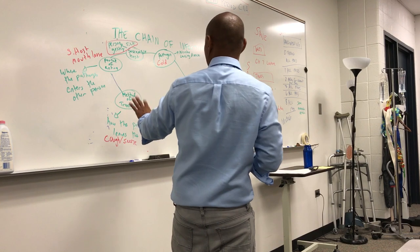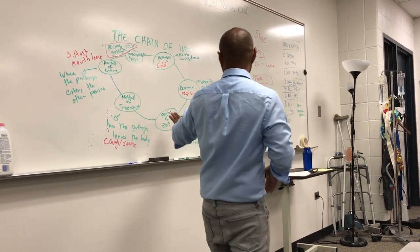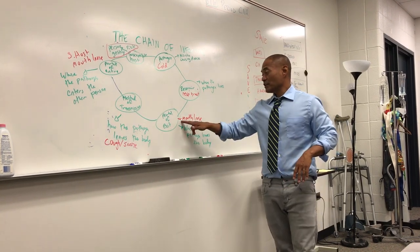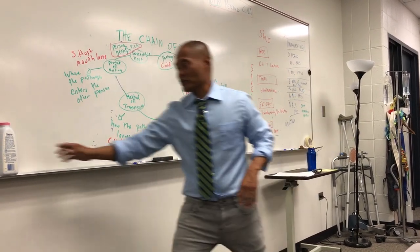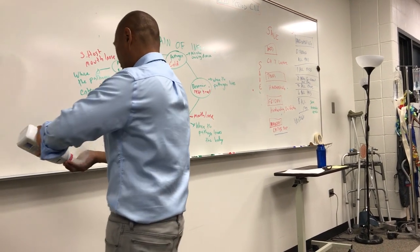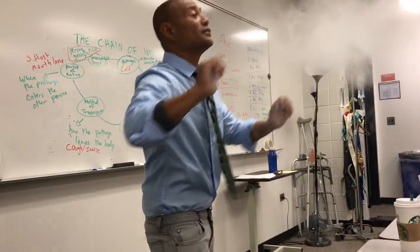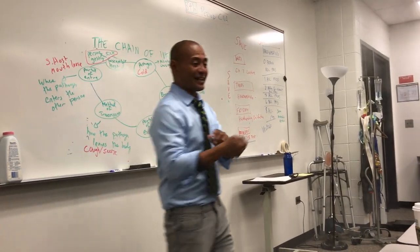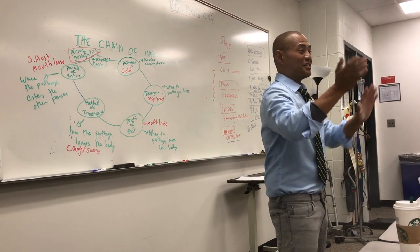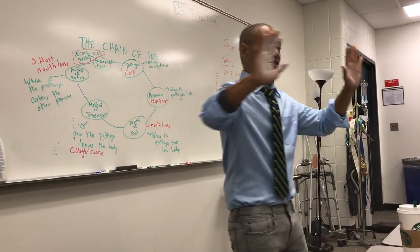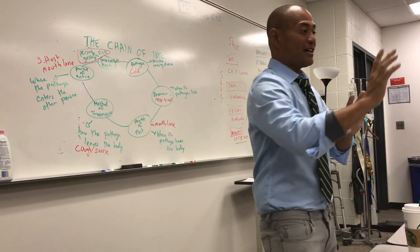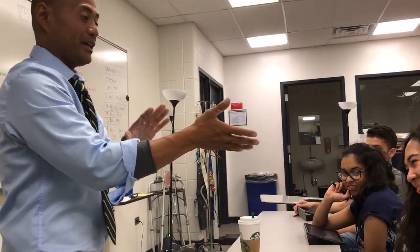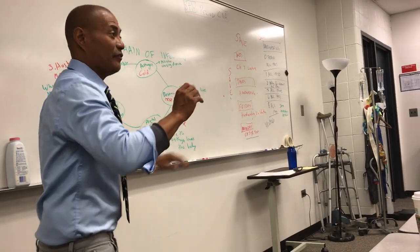We're going over the chain of infection here and we're talking about a cold. We've talked about how the cold lives in the respiratory tract, and then the portal of exit is the mouth and nose, and the method of transmission is a cough and sneeze. So when a person sneezes — that's how a sneeze looks — you can't see it because it's just flying around with respiratory droplets.